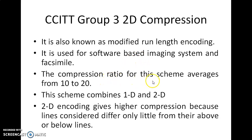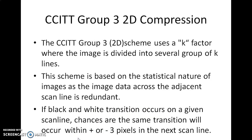The compression ratio averages from 10 to 20. It combines both 1D and 2D schemes. 2D encoding gives higher compression because it considers multiple lines — the difference is only little from the above and below lines. This uses a K factor where images are divided into several groups of K lines.